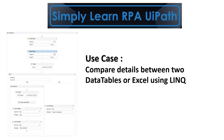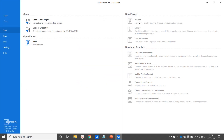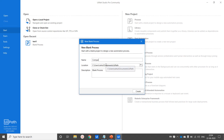Hello friends, this is Rahul. Let's simply learn Robotic Process Automation with UiPath. In this video we will compare the details between two data tables or Excel records using LINQ. Let's open UiPath Studio and name the process 'Compare Data Tables Records'.